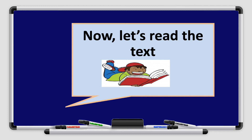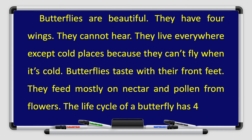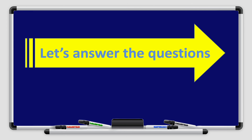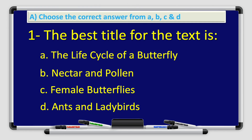Now let's read the text together — listen carefully and follow with me. Butterflies are beautiful. They have four wings. They cannot hear. They live everywhere except cold places because they can't fly when it's cold. Butterflies taste with their front feet. They feed mostly on nectar and pollen from flowers. The life cycle of a butterfly has four stages: egg, caterpillar, chrysalis, and adult butterfly. Female butterflies are usually larger and live longer.